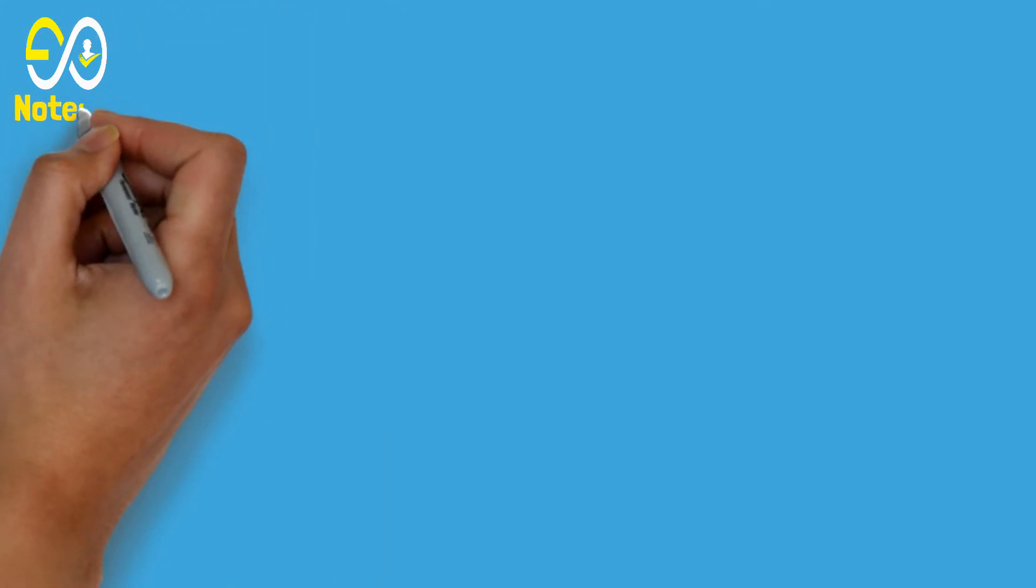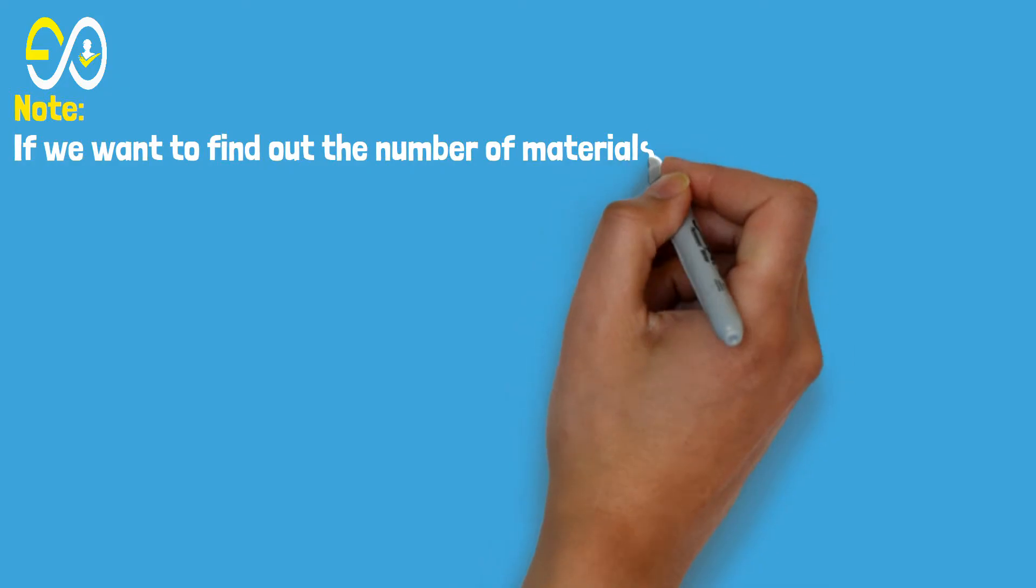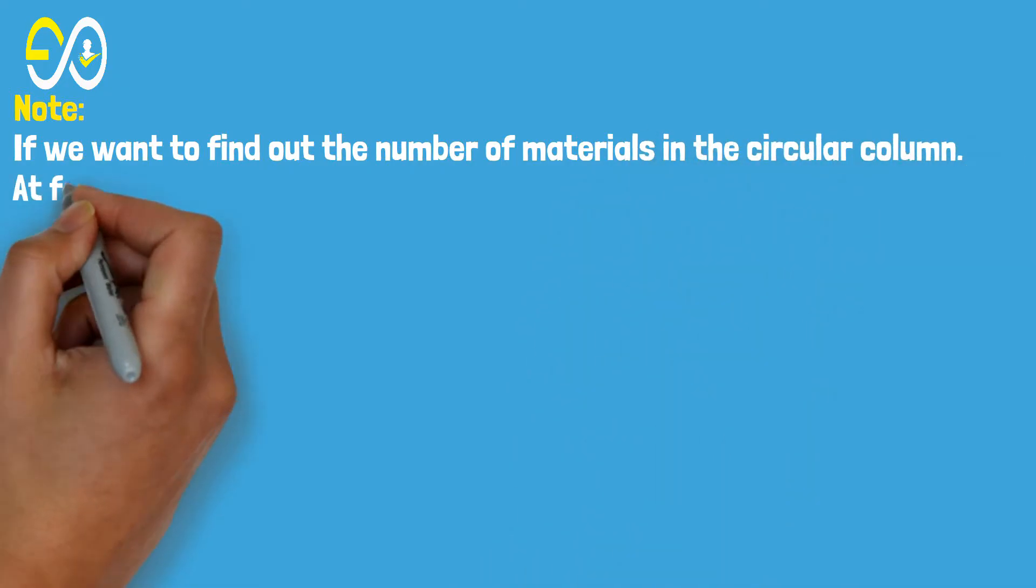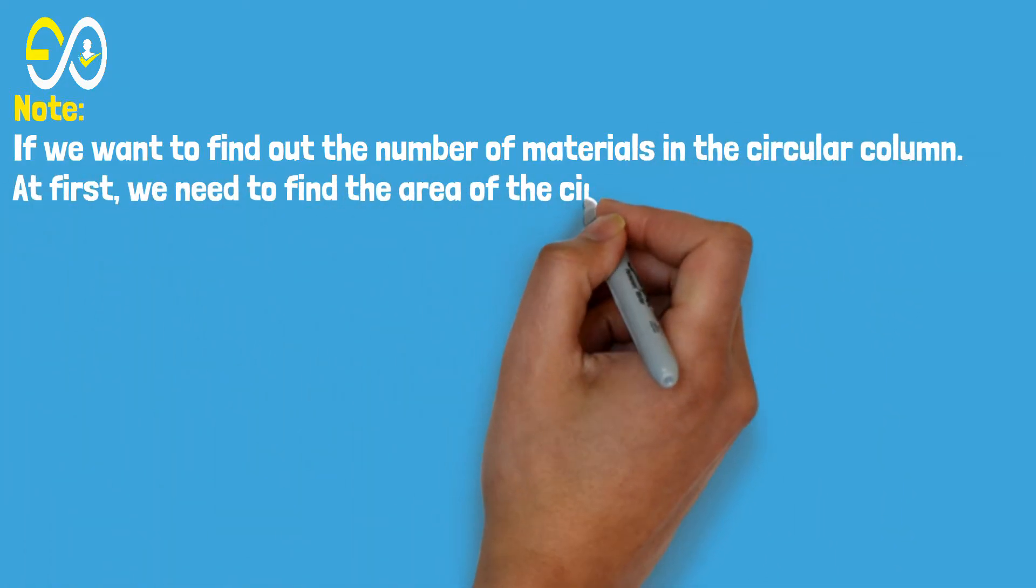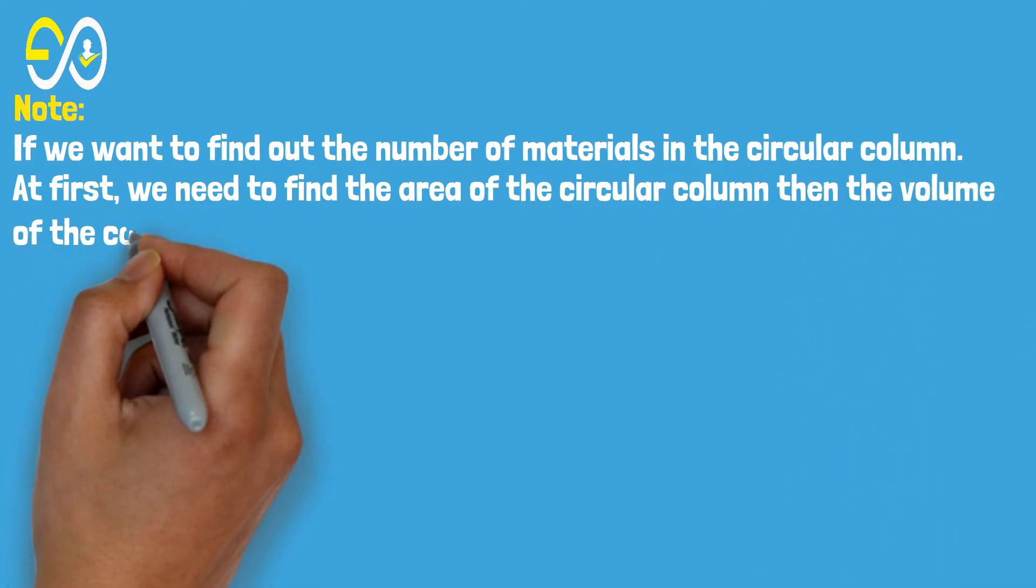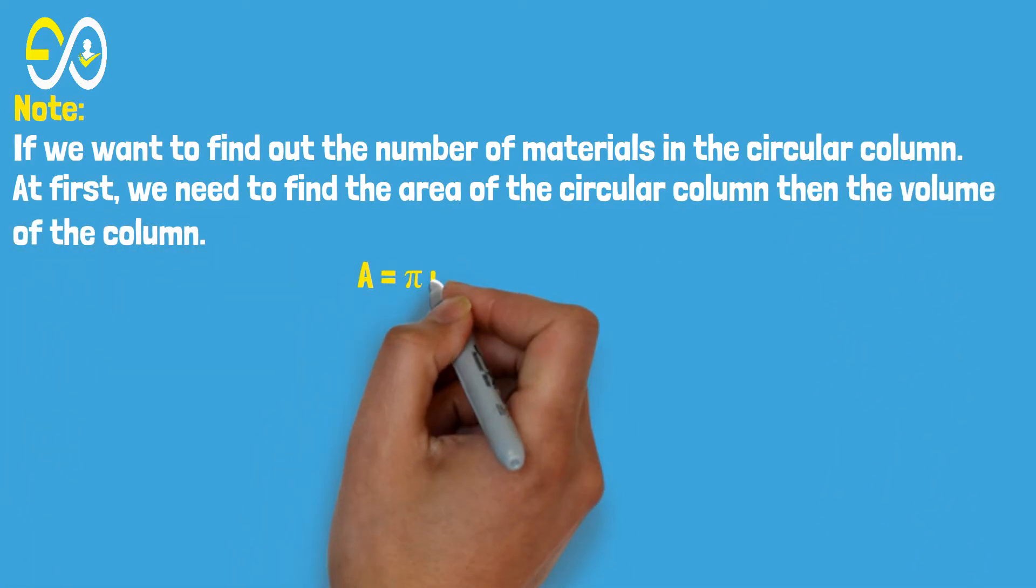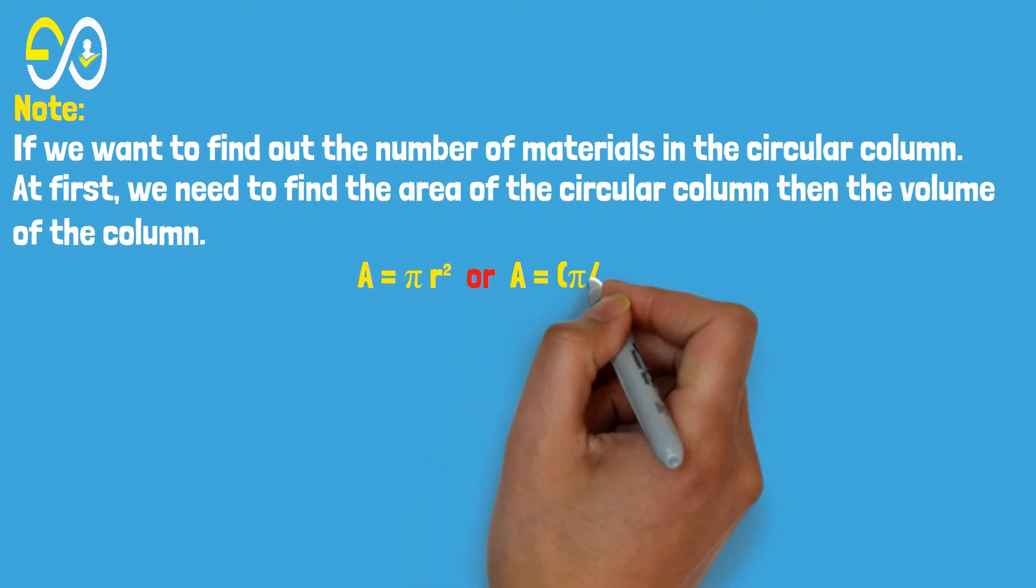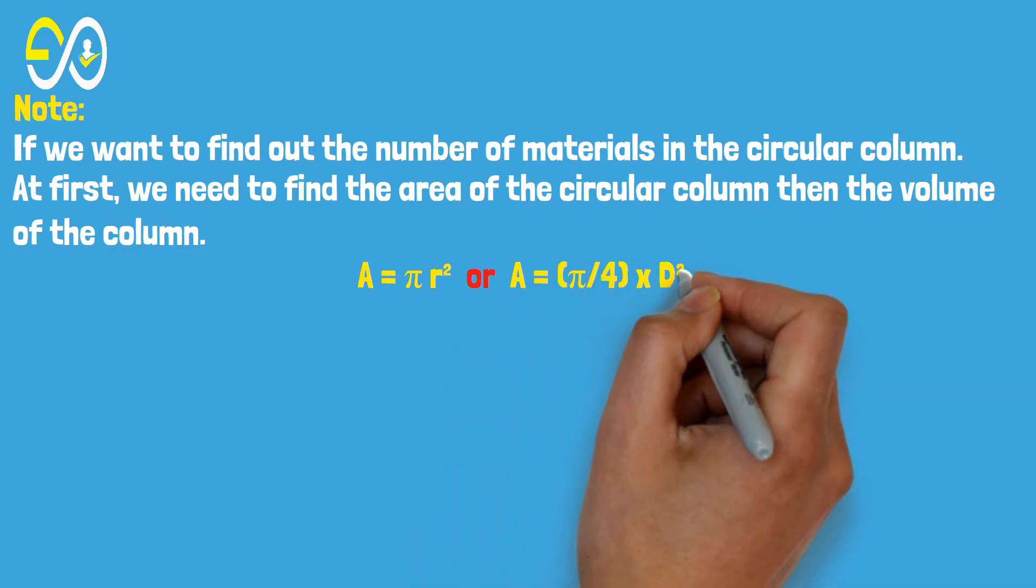Note: If we want to find out the number of materials in a circular column, first we need to find the area of the circular column, then the volume of the column. Area equals pi times radius squared, or area equals pi over 4 times diameter squared.